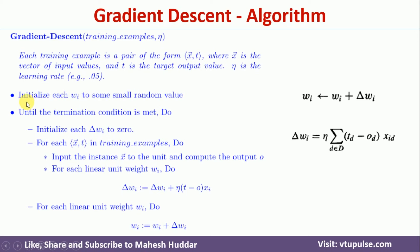What we need to do here is initialize each of the weights. For example, if we have n number of input variables, we need to have n number of weights, and all those weights we need to initialize with a small random value. Once you initialize all these weights to a small random number, next, we loop unless and until a termination condition is satisfied. After every iteration, we calculate something called as error. If that error is acceptable, then we stop updating the weights. Otherwise, we will go on doing these particular steps again and again.